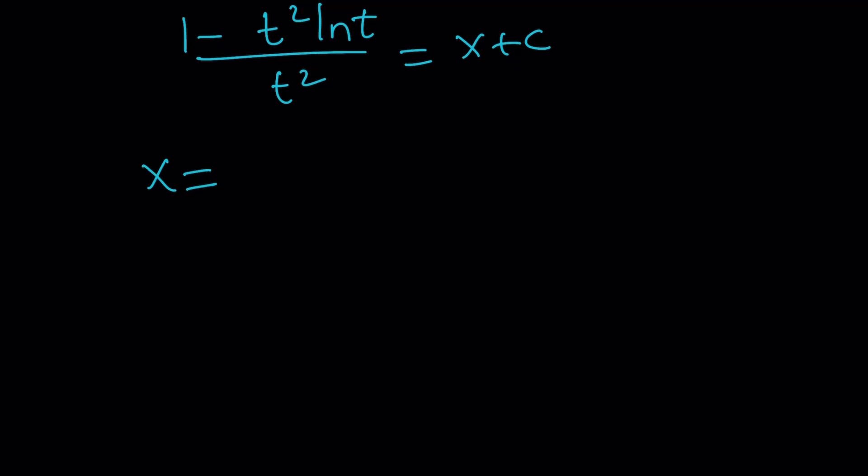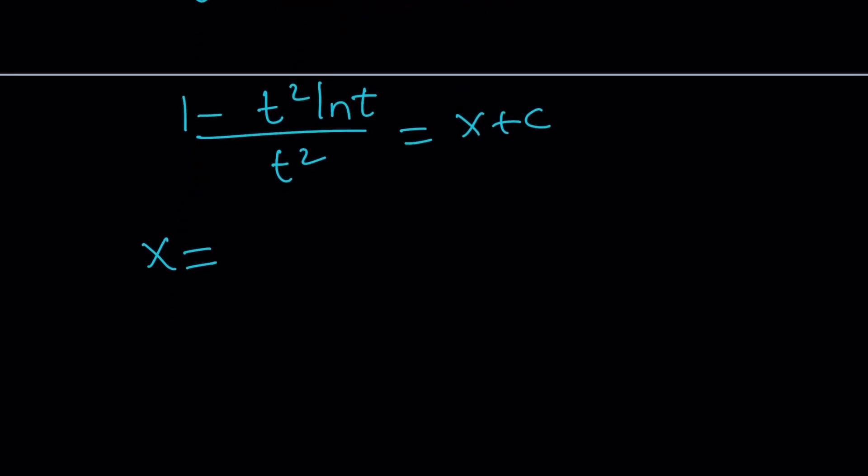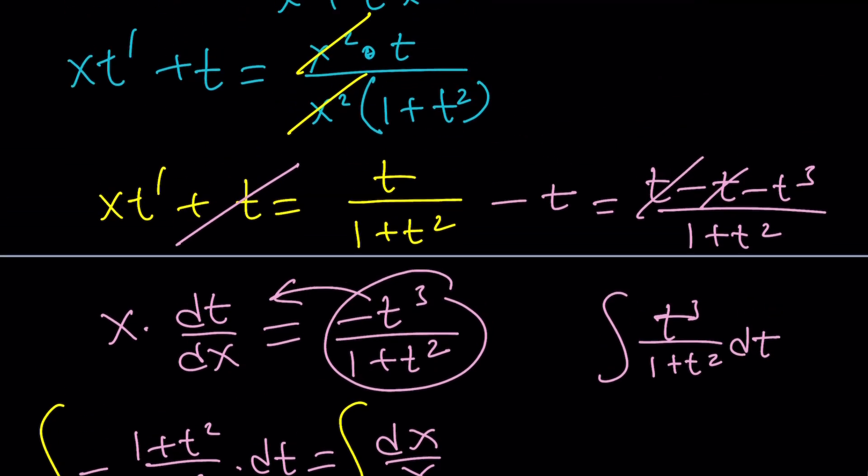What can I do with this? I could probably just make a common denominator. (1 - t²ln(t))/t² = x + c. And then we could probably subtract c from both sides to get the x by itself. But wait a minute. What is t? I'd like to know. So maybe after doing this, we can go ahead and take care of that. Subtracting a constant is the same as adding another constant, which is the opposite. So we can write it like this.